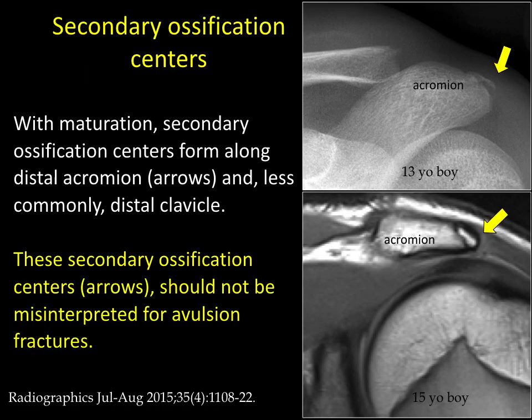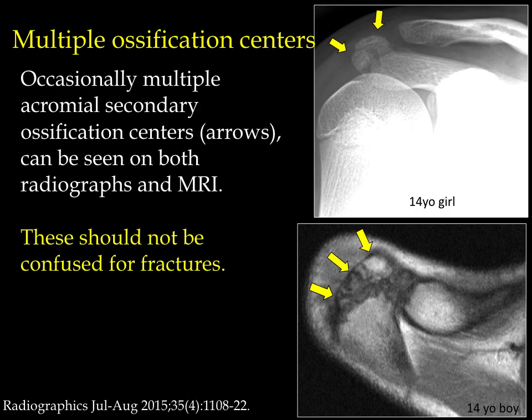Other normal variants are the secondary ossification centers we readily see in adolescents on the distal acromion. We might misinterpret these for avulsion fractures, but MRI shows us clearly that this is part of the acromion and just a normal ossification center. We can actually get a few of them, giving a lobulated appearance of the distal acromion as shown on MRI — again, a normal developmental variant.